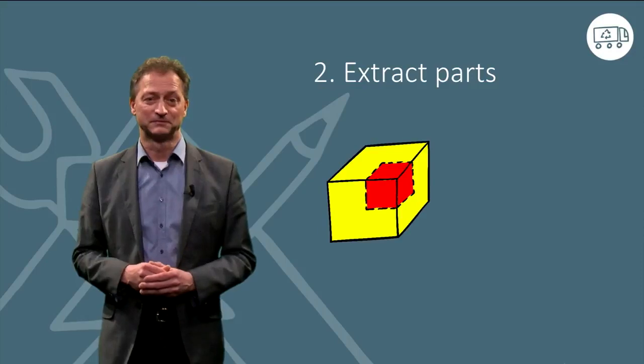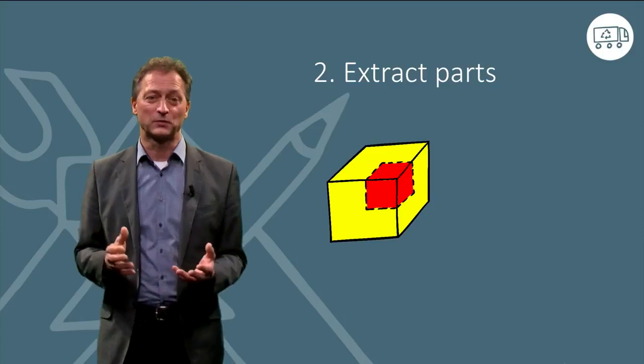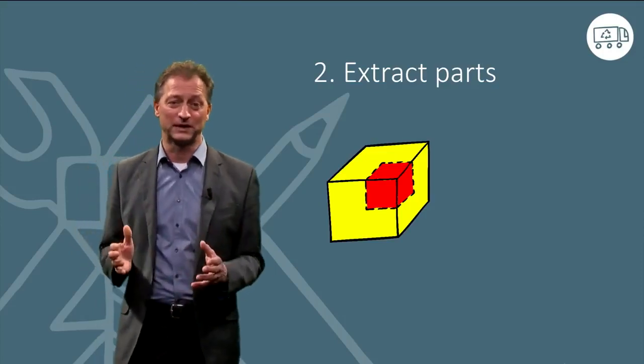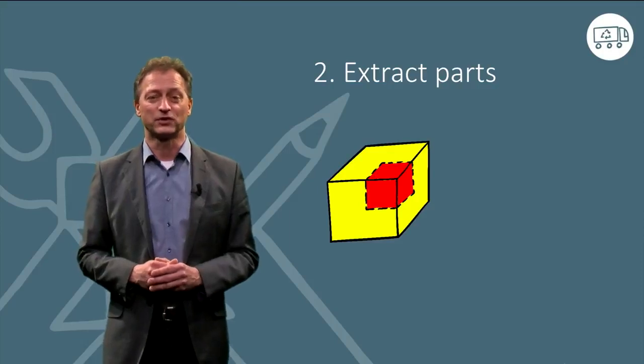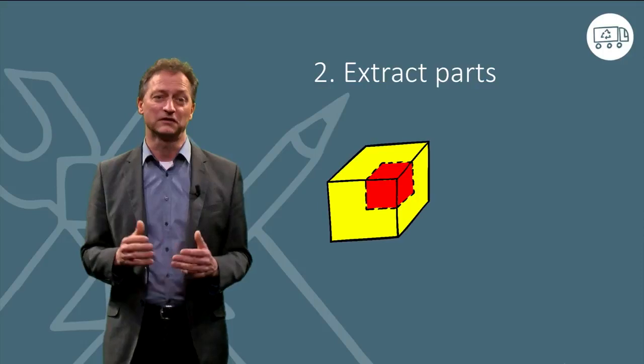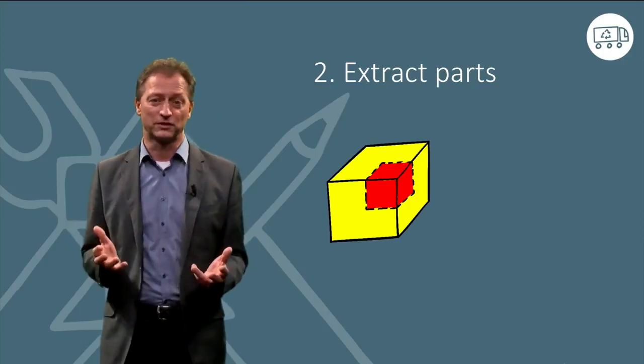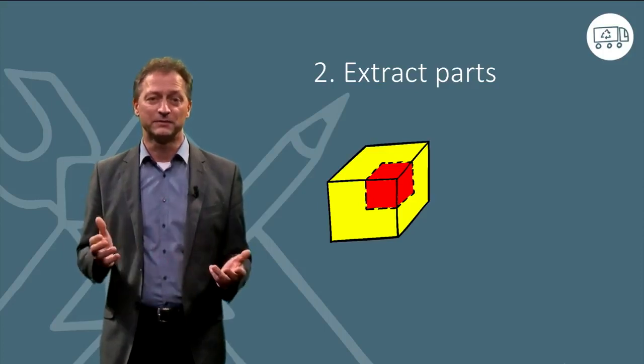The second step, extract the parts which can be reused. In this step, the product will be checked for well-functioning parts. If these parts are easy to dismantle from the main product, then they can fulfill their designated task in either a similar or a different product. In the case where they no longer work as needed, they can be re-manufactured.